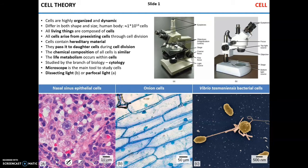Cells are highly organized structures that are not static. They change, they are dynamic — they can grow, they can divide, they can move. Cells can be very small, like these cells shown here, or cells can be significantly larger, like these large bacterial cells shown here.